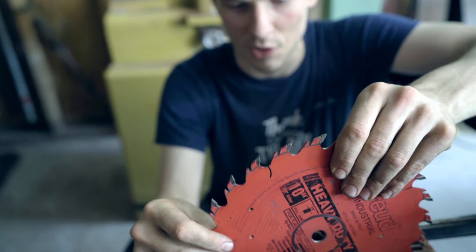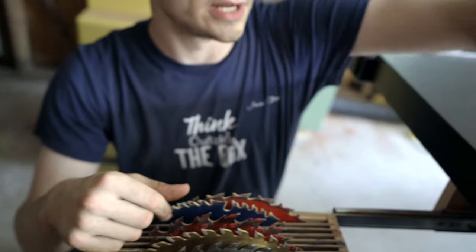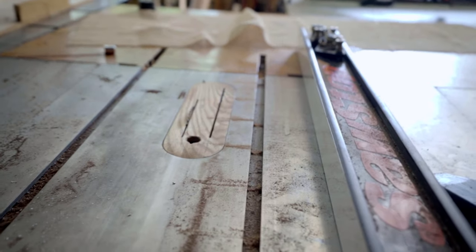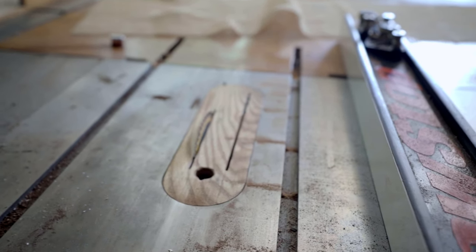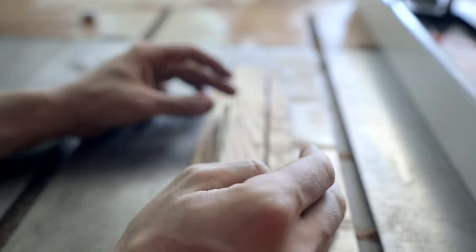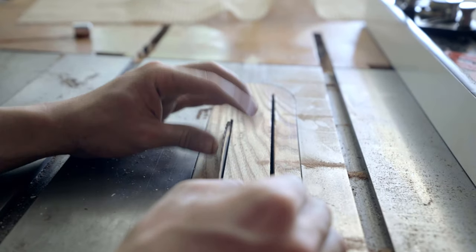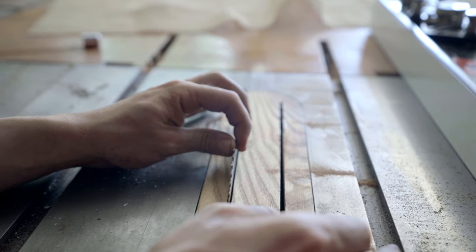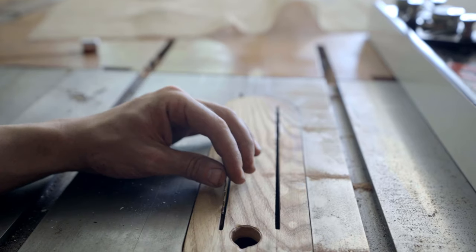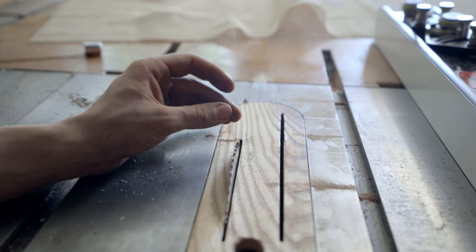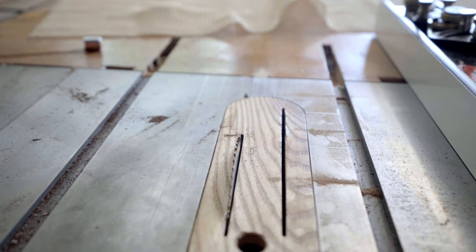I have a couple thin blades. Right now on the table saw I have this blade that was actually made for circular saws - it's only 60 thousandths of an inch. That's a really thin kerf for a table saw and I like the cut that it does. Sometimes I use it to get those super thin kerfs that you wouldn't be able to get with one of these blades.